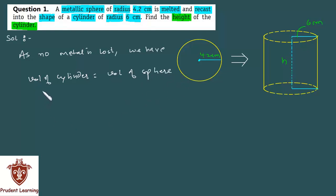We know that volume of a cylinder is given by πr²h and volume of a sphere is given by 4/3 πr³.